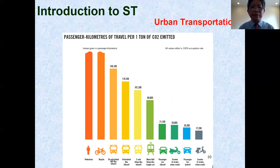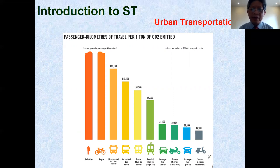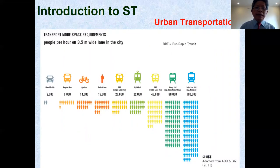From the figure we can see that, based on passenger kilometers of travel per ton of carbon dioxide emitted to the atmosphere, the scooter with two-stroke engine has a high emission of carbon dioxide. The figure also makes a comparison about space requirements for different transport modes.